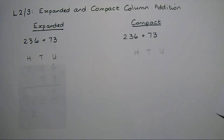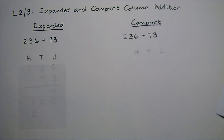One way of explaining the difference between expanded and compact column addition is that with expanded column addition we don't use carries — we add each column in turn and then add the final total. With compact column addition, more advanced students can progress to carrying underneath the line.